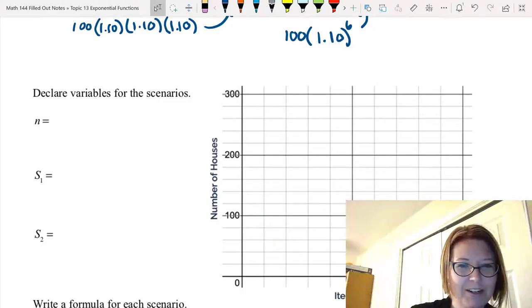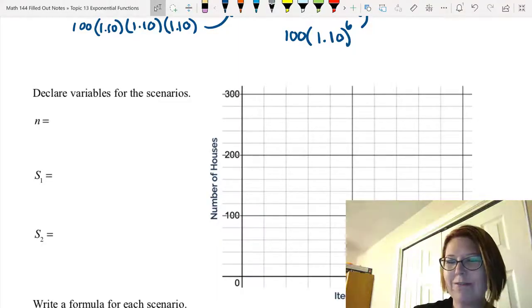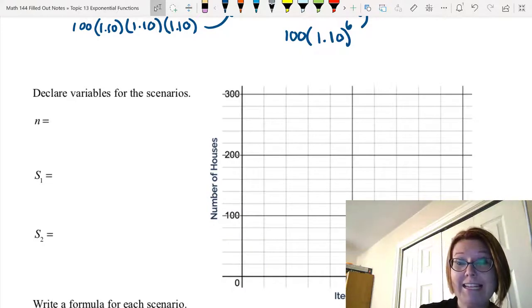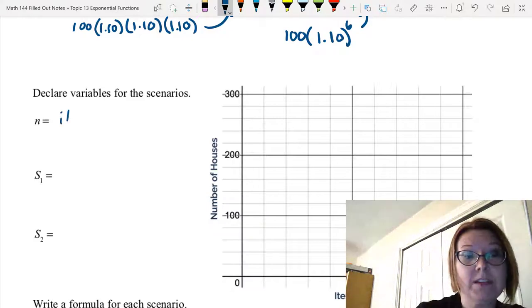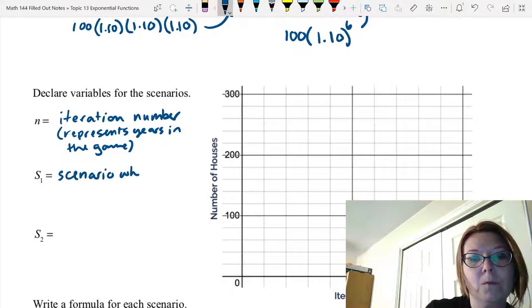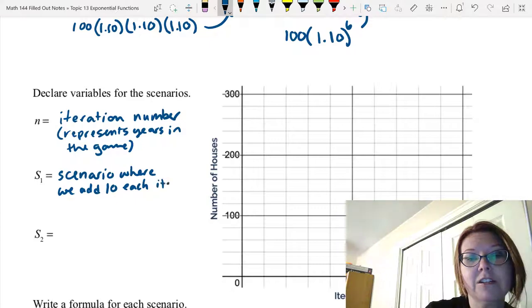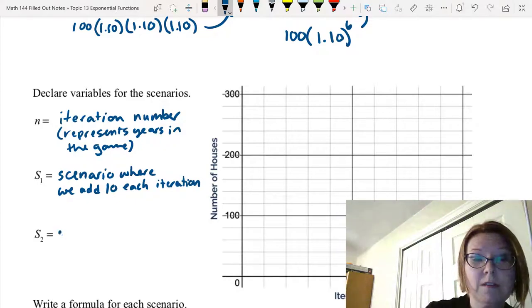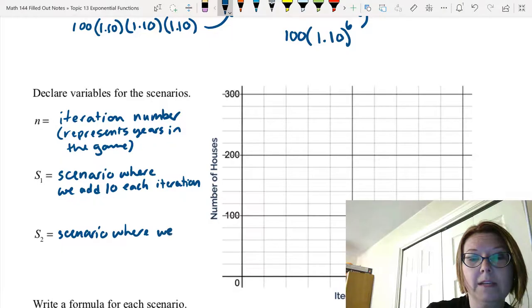Let's clear the variables for our scenarios and then go ahead and graph these in Desmos. First, n is just the iteration number for our game, which represents years in the game. S1 is going to be our first scenario where we add 10 each iteration. And S2 is going to be the scenario where we increase by 10% each iteration.